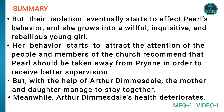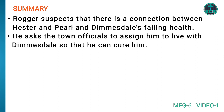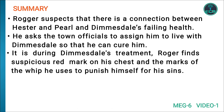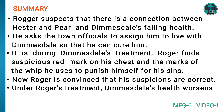Meanwhile, Arthur Dimmesdale's health deteriorates. Roger suspects a connection between Hester and Pearl and Dimmesdale's failing health. He asks the town officials to assign him to live with Dimmesdale so that he can cure him. During Dimmesdale's treatment, Roger finds a suspicious red mark on his chest and marks from the whip Dimmesdale used to punish himself for his sins. Roger is now convinced that his suspicions are correct.